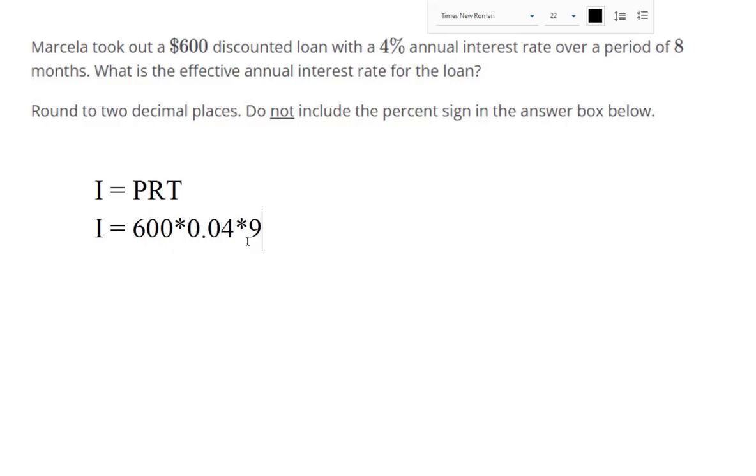And remember, when you plug in time, 8 needs to be divided by 12 because our percentage interest rates are always in terms of years. So, it's 8 twelfths of a year.